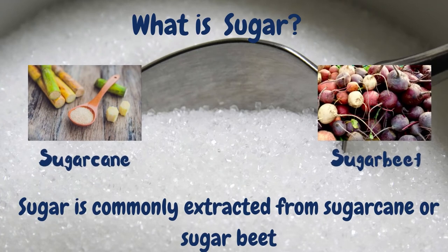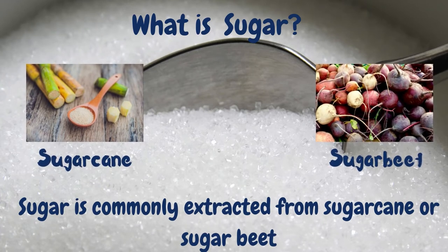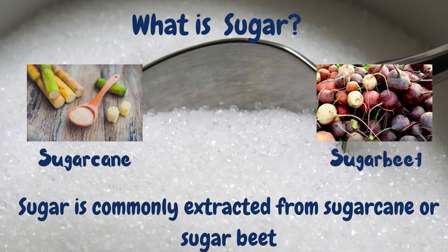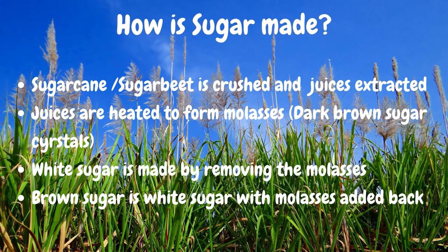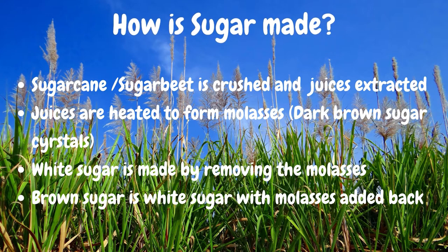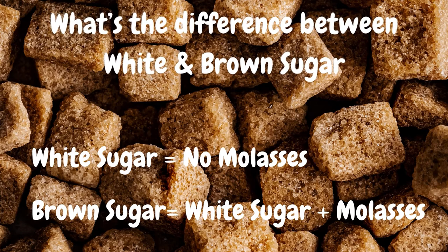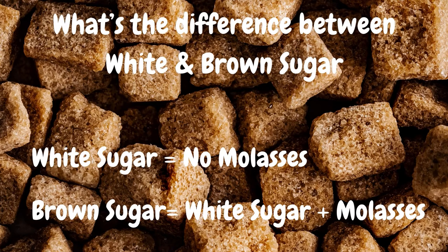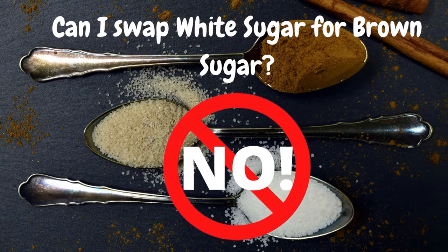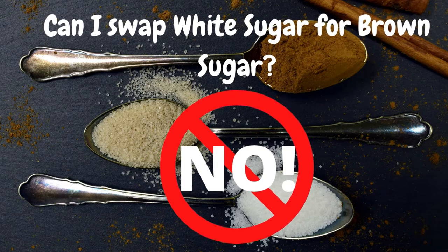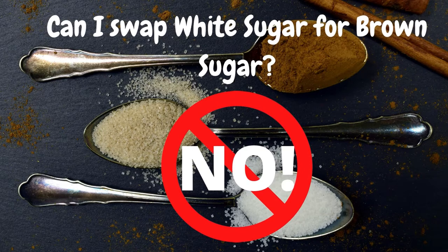To understand why there are so many different types of sugar, let's take a closer look at how sugar is made. Sugar, as we know it, is made from sugarcane or from sugar beet. The sugarcane or sugar beet is crushed and the juices are extracted. These are heated to form molasses, and from there you can make different types of sugar. White sugar is made by removing the molasses, while brown sugar is white sugar with molasses added. So that's the basic difference: white sugar has no molasses, whilst brown sugar either retains original molasses or is made of white sugar with molasses added back in. This is why, if your recipe calls for white sugar, you really can't substitute it with brown sugar as they are made of different consistency.